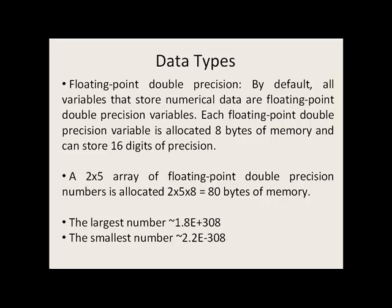The first data type I'll be discussing is floating point double precision. By default, all variables that store numerical data are floating point double precision variables. Each floating point double precision variable is allocated eight bytes of memory and can store 16 digits of precision. Each element in a floating point double precision array is also allocated eight bytes, so a two by five array would require 80 bytes of memory. The largest number you can store is on the order of 10 to the 308, and the smallest is on the order of 10 to the minus 308.